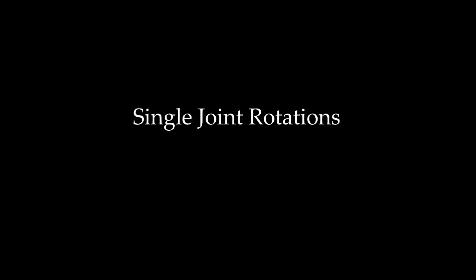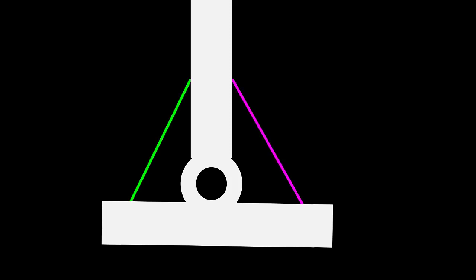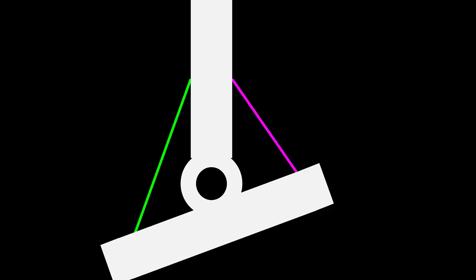Let's begin by seeing how MTC length changes during rotations of a single joint. Here we have a generic joint with two MTCs, one on each side of the joint. Their lengths are annotated by L1 and L2 respectively. The joint rotated in a counter-clockwise direction, and note the length changes in both L1 and L2, denoted by the prime after the rotation.